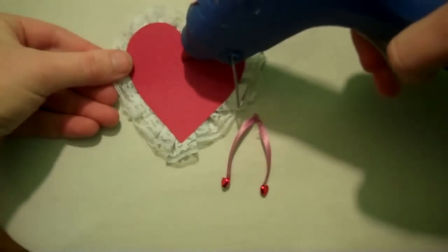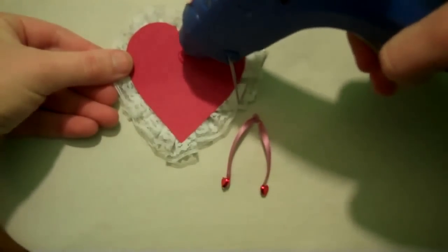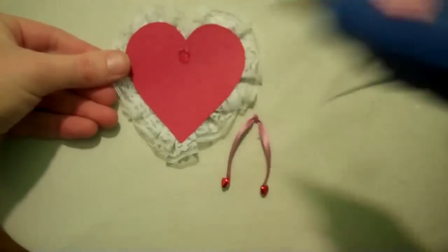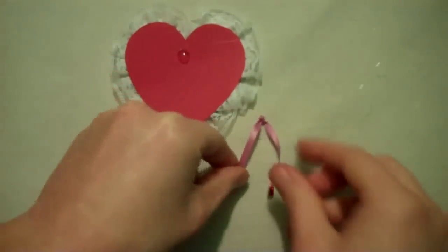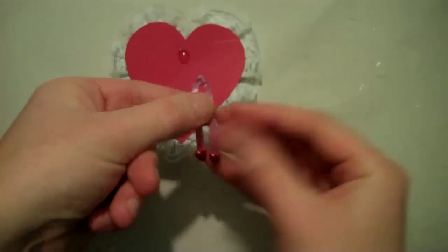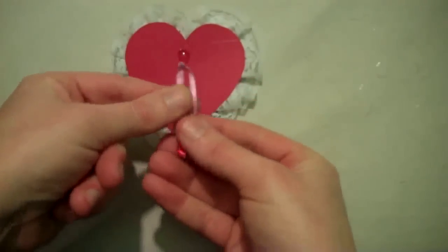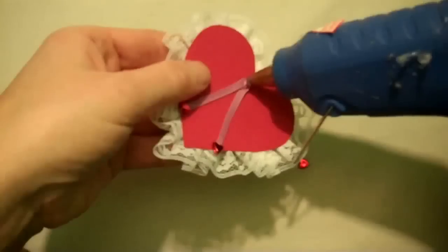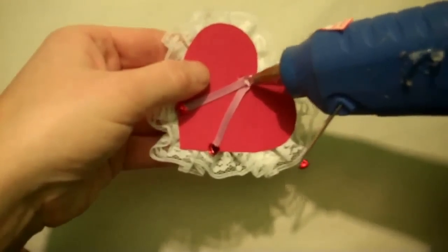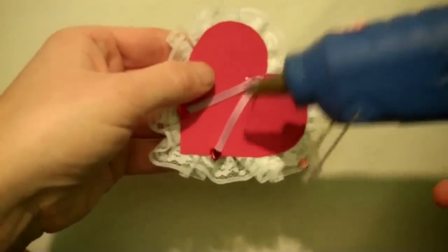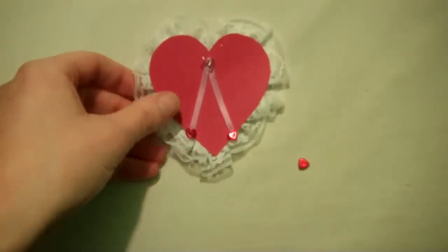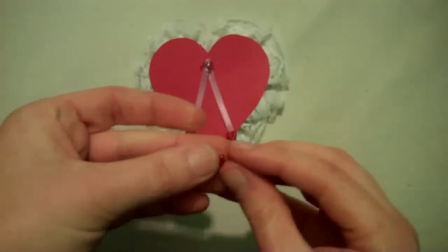Then place a drop of glue in the center of the cardstock heart towards the top and press the knot onto it, making sure the heart beads are on the top side of the ribbon facing you. Then place another drop of glue right on top of the knot and attach another heart-shaped bead.